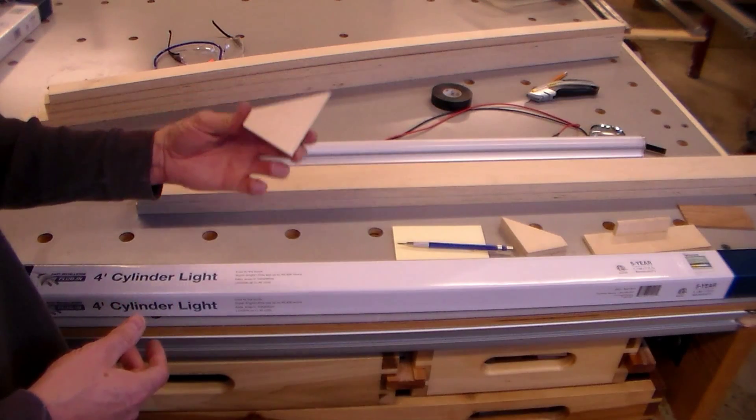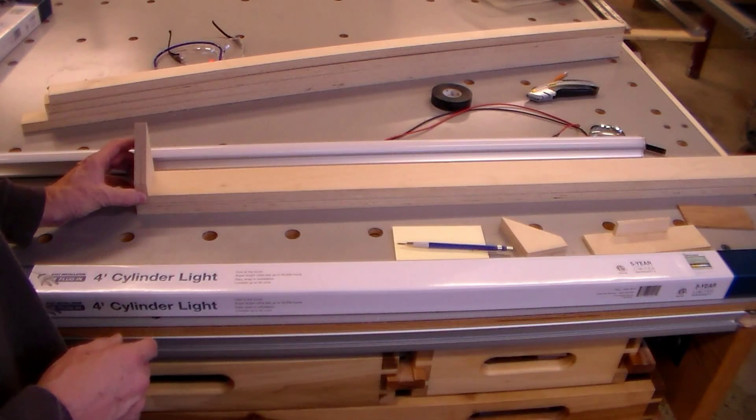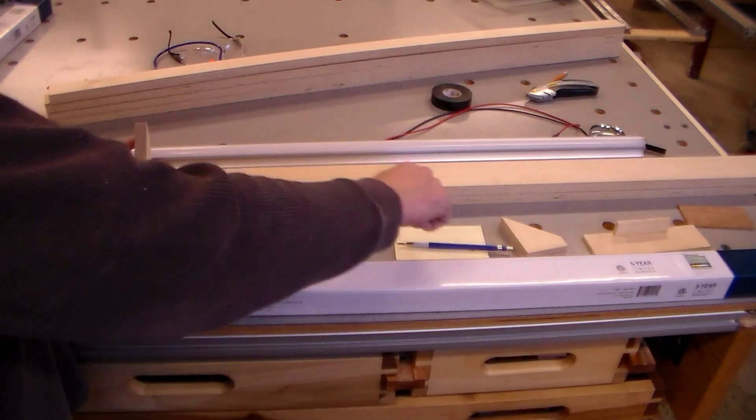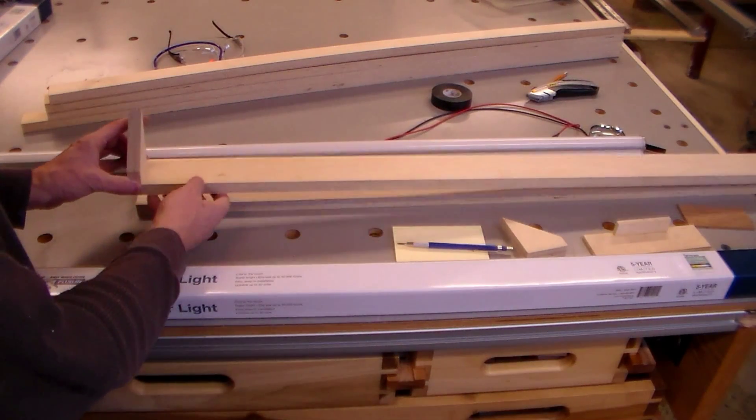This is that triangular piece that I was showing in the drawing. That's going to sit on here like this. Then I've got to make this piece here and this piece. And that I think will be out of solid wood.